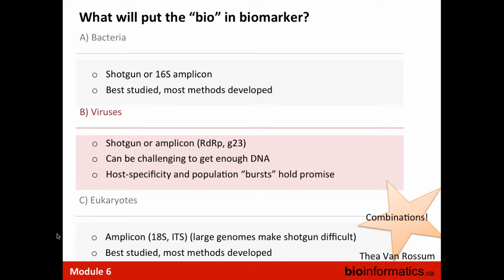One challenge with viruses is getting enough DNA, though a population burst or active infection can provide sufficient material. For eukaryotes, similar amplicon-based methods apply using 18S or ITS markers. However, eukaryotes have large genomes where only 2–30% is protein-coding, making shotgun sequencing a more challenging route to biomarker discovery, though bacterial methods can be adapted.